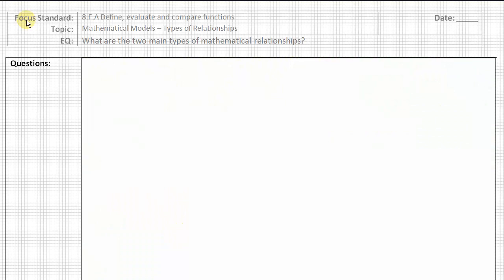The focus standard for today's lesson comes from Grade 8 Functions, Standard A, Define, Evaluate, and Compare Functions. Our topic for the lesson today comes from our Mathematical Models Unit on Types of Relationships. Our essential question is what are the two main types of mathematical relationships?